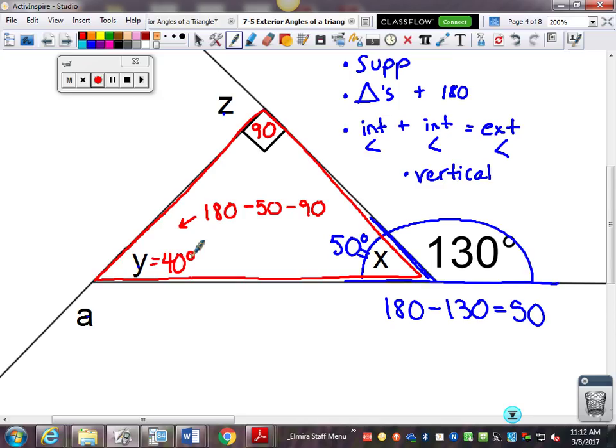Then, there's a lot of different ways you can do this. You don't have to do these all the same way. I could figure out z, for example. I could use supplementary. If this angle right here is 90, if this angle is 90, then 180 minus 90 is also 90. I could do it that way. I could also say that 40 and 50 are interior angles that add up to 90.